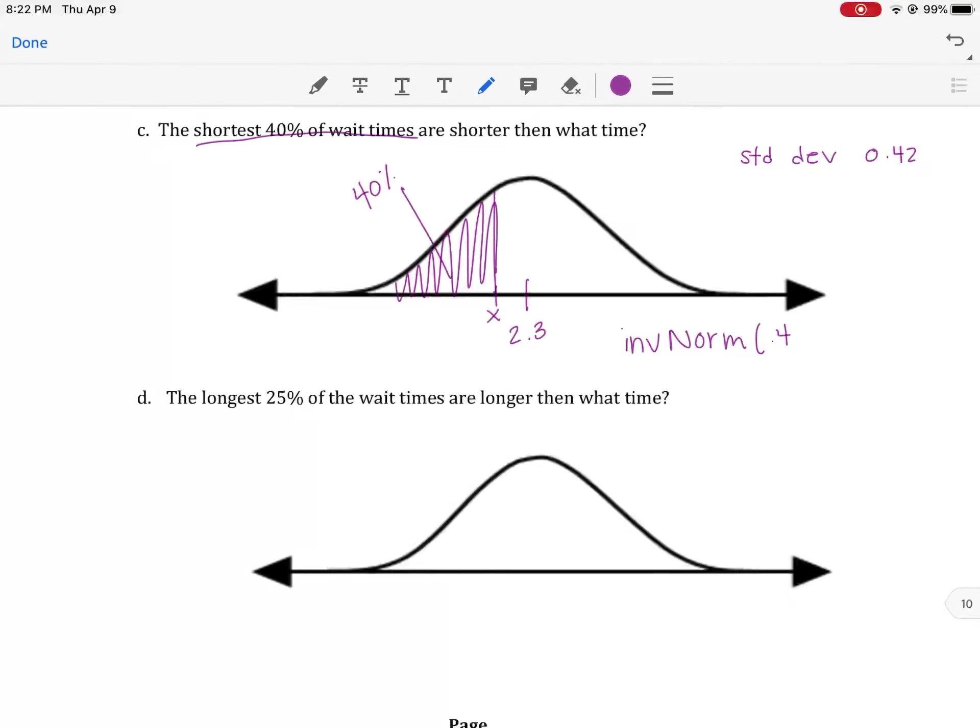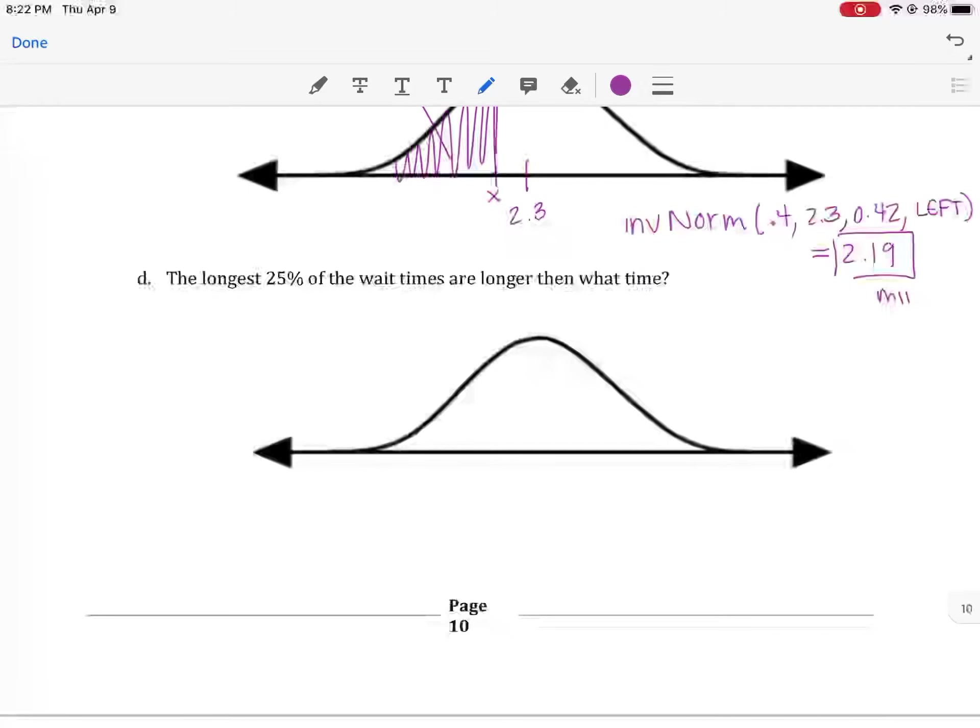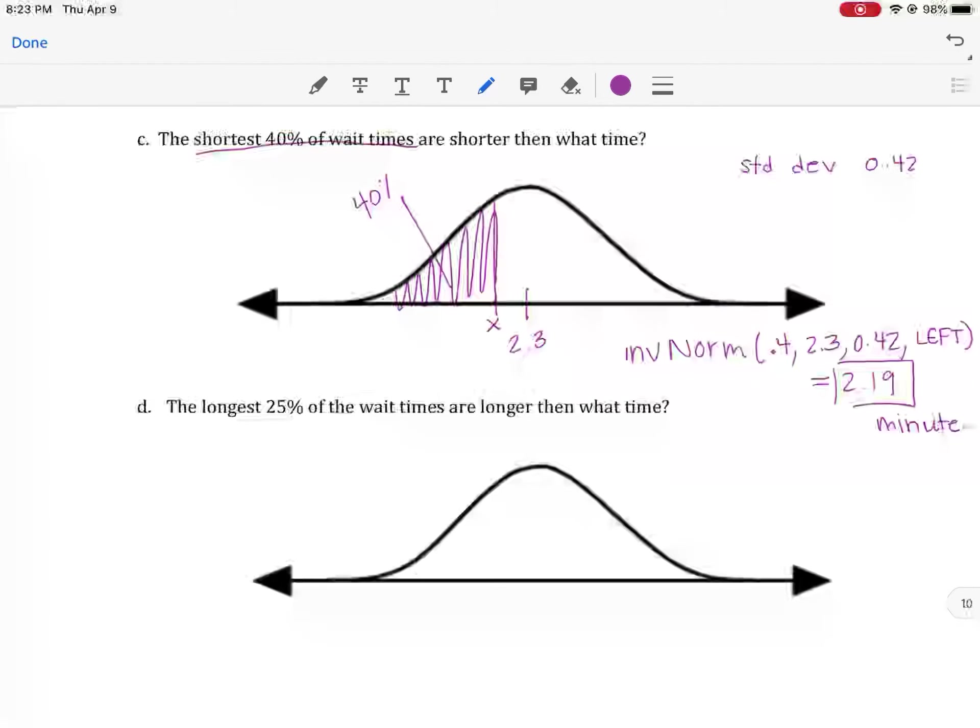So here's your work. If we write the function we use, the inverse normal, we then write our inputs of 0.4 for the 40% area, 2.3 is the mean, 0.42 is the standard deviation. And then we're going to put left on here so they know what test we did. And our answer is 2.19 minutes. So 2.19 minutes is the cutoff time or less for the shortest 40% of wait times.